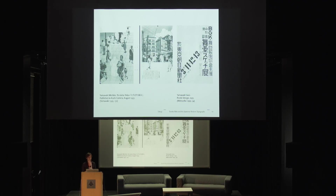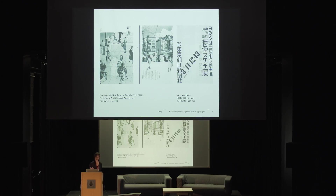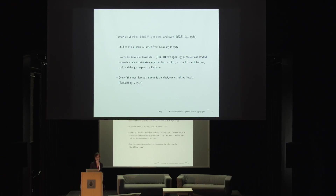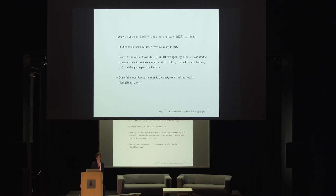In the 1930s there was a development in how to create a Japanese typographic scheme. The couple Yamawaki came back from Bauhaus studies in Dessau and started to do graphic design. At the same time they started to teach at a university set up in Tokyo which was quite inspired by the Bauhaus. One of the most famous alumni of this school was Kamikura Yusaku, who later became a leading figure in Japanese graphic design.